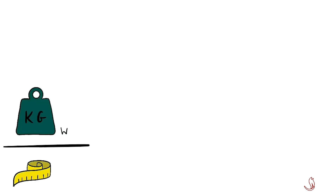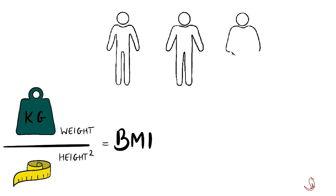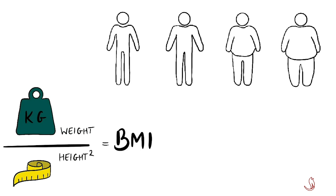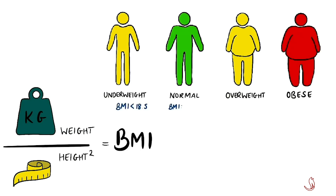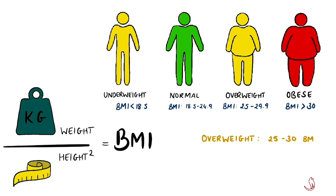What classifies someone as being overweight versus obese is their BMI. BMI is calculated by dividing your weight in kilograms by your height in meters squared. A person is classed as overweight if their BMI is over 30.